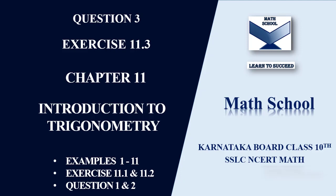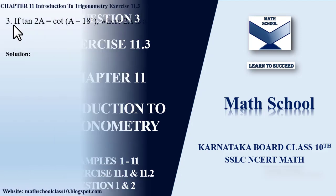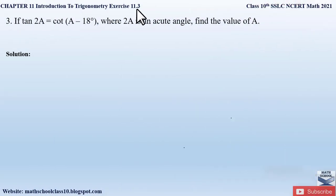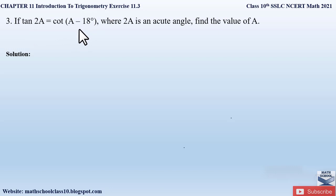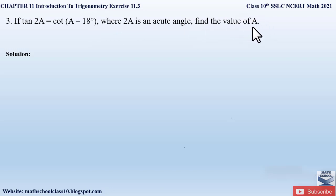Make sure you've watched the whole video till the end and practice the problem I'm solving so that I can make more such videos for you. So now quickly let us begin. Question number three from exercise 11.3, chapter 11, Introduction to Trigonometry says: if tan 2A is equal to cot of (A minus 18 degrees), where 2A is an acute angle, find the value of A.